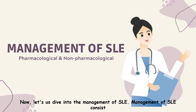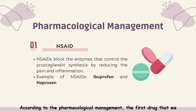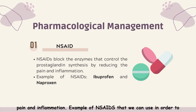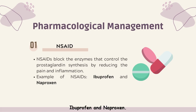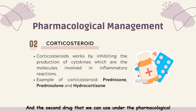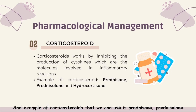Now let us dive into the management of SLE. Management consists of pharmacological and non-pharmacological approaches. For pharmacological management, the first drug is NSAIDs. NSAIDs block the enzymes that control prostaglandin synthesis, thereby reducing pain and inflammation. Examples of NSAIDs used to manage SLE are ibuprofen and naproxen. The second drug is corticosteroids, which work by inhibiting the production of cytokines — molecules involved in inflammatory reactions. Examples include prednisone, prednisolone, and hydrocortisone.